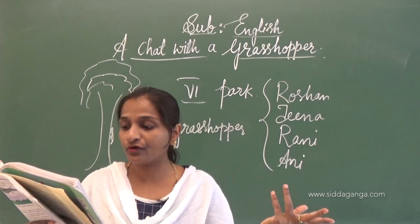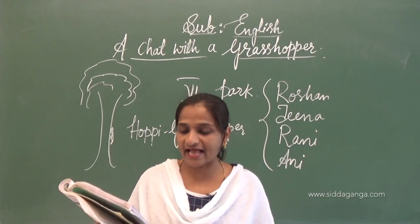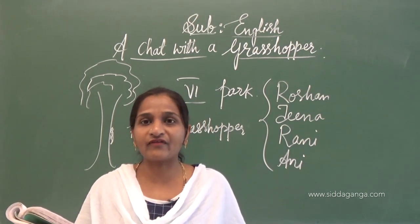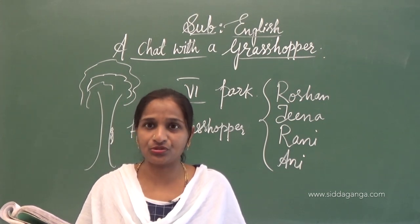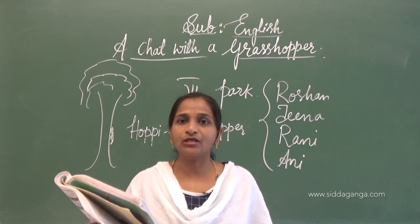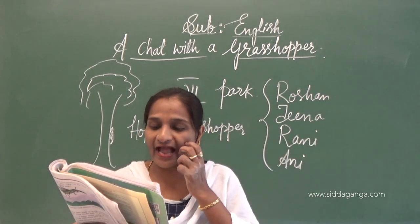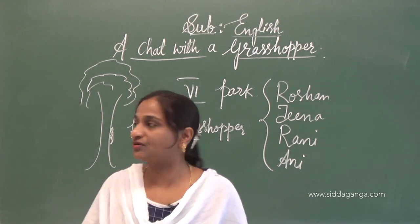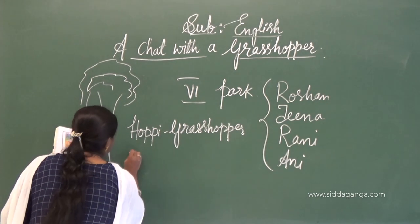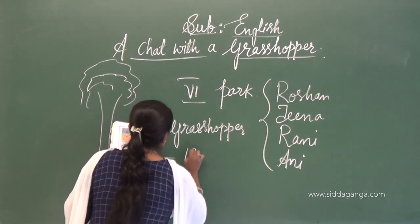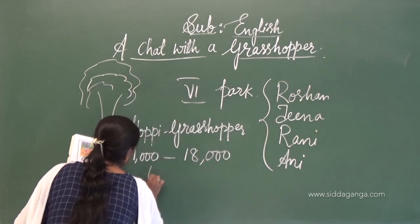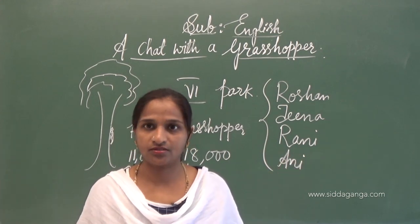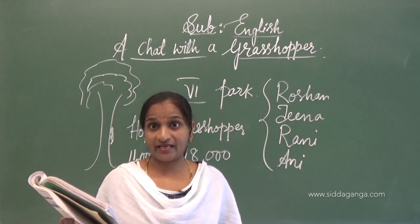Hoppy replies: I live in different places. You can find me everywhere. You will find 11,000 to 18,000 varieties of grasshopper in this world. So, Hoppy the grasshopper told us there are 11,000 to 18,000 varieties of grasshoppers in the world.